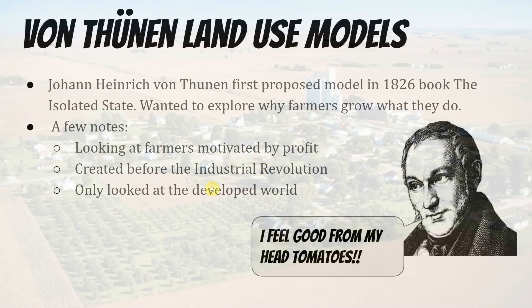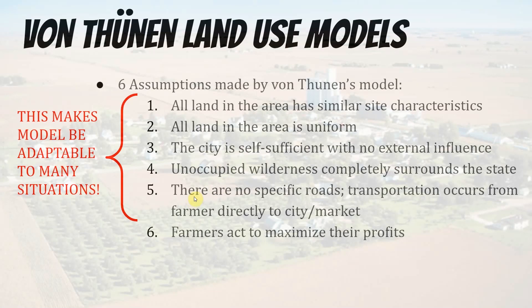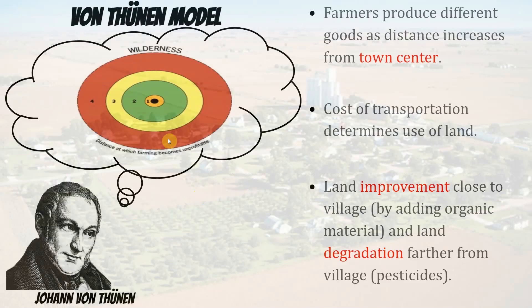Now let's look at a man named Johann von Thunen. In 1826, he wanted to understand why farmers farm differently at different distances from a city. He noticed all farmers are motivated by profit, and this was before the Industrial Revolution took full flight. The key assumptions are that the land is all pretty much even and arable — not swamps, deserts, or mountains — and that farmers are trying to maximize their profit. He came up with a model that looks like a bullseye.